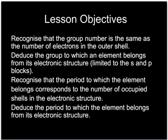You should know two words about the periodic table: group and period. All the elements in the same group of the periodic table have got the same number of electrons, and the group number is the same as the number of electrons in that outer shell. The period to which an element belongs corresponds to the number of occupied shells in the electronic structure, and as you go from left to right across a period you are filling up a particular shell.